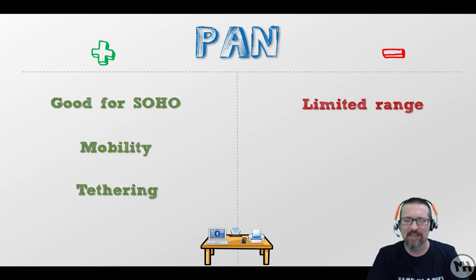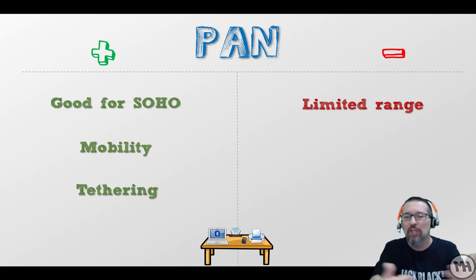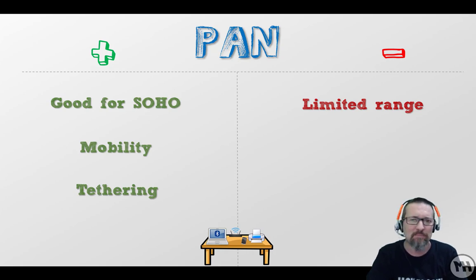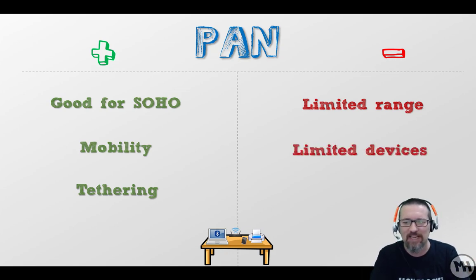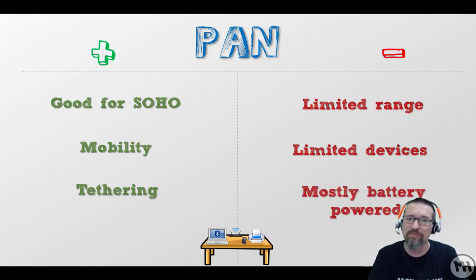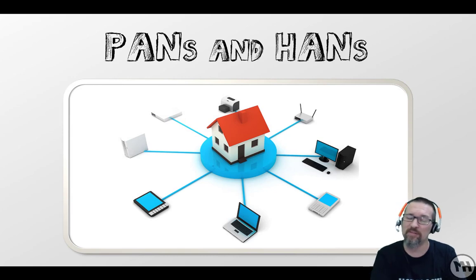Some negative aspects or disadvantages of a Personal Area Network: it has a limited range — really just your desk, your own private little bubble. The range on Bluetooth is about 10 meters, although Bluetooth Low Energy (BLE) extends a bit further. There are also limited devices — you can't plug in a huge number of things; it's designed for a small, limited space. A lot of your devices, especially when traveling, will be battery powered, so it's important to have power supply or keep your batteries fully charged. That covers PANs and HANs — Personal Area Networks and Home Area Networks — and the differences between the two.